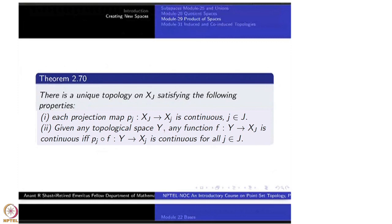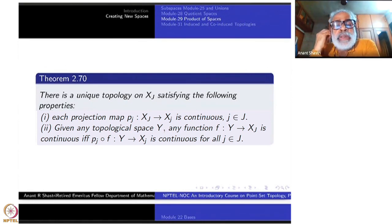This is the theorem. There is a unique topology on product Xj satisfying the following properties. Each projection map is continuous. Given any topological space Y, any function f from Y to product Xj is continuous if and only if the coordinate function pj composite f, they are continuous for each j. So this is the claim.